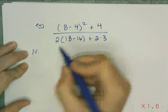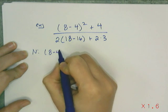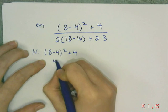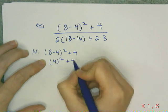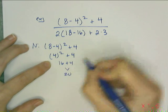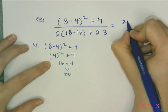So I'm going to put a little n for numerator, and I'm going to do all of the work for the numerator over here. So 8 minus 4 is 4 squared plus 4. 16 plus 4 gives me 20. So I'm going to go back up here. I'm going to put the 20 in the numerator.